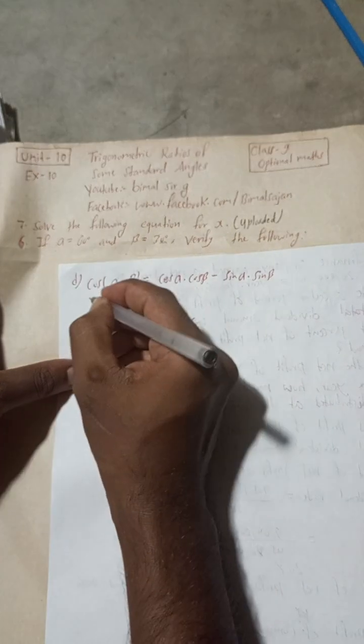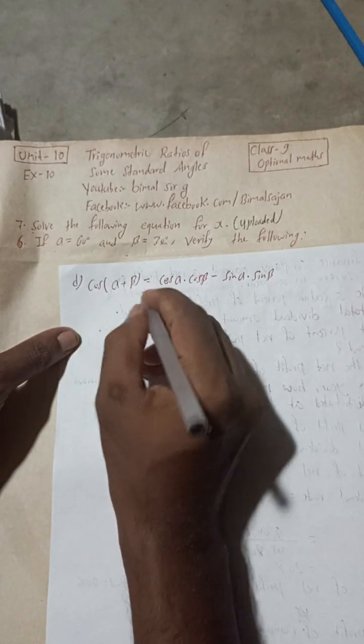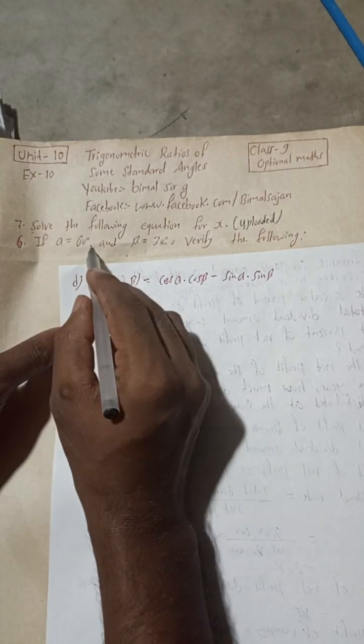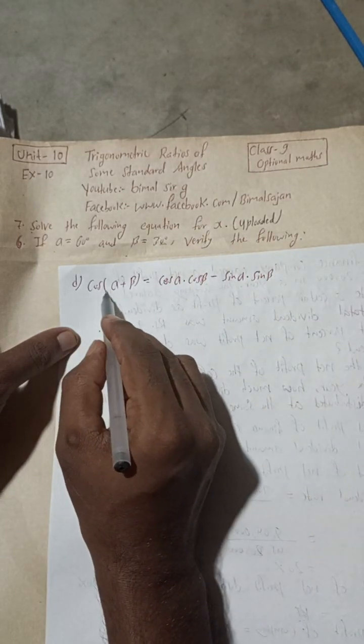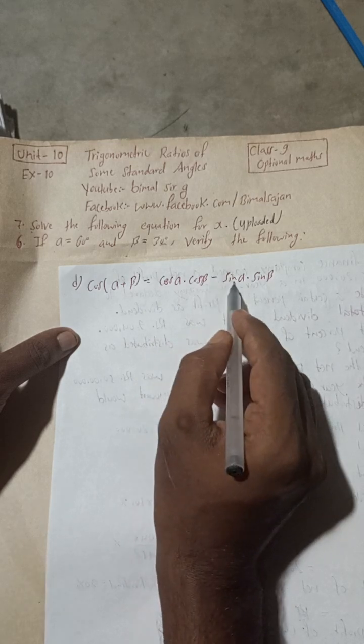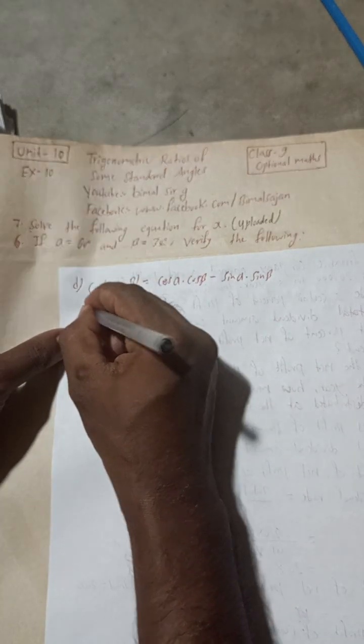Now let's begin this solution. Here, if alpha is equal to 60 degrees and beta is equal to 30 degrees, verify the following: cos(alpha + beta) equals cos(alpha)cos(beta) minus sin(alpha)sin(beta).